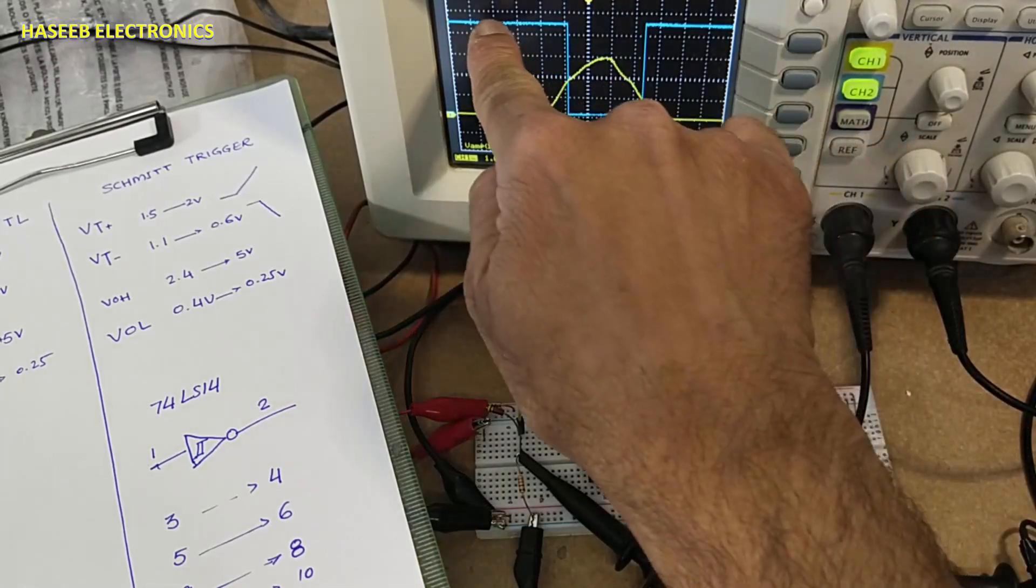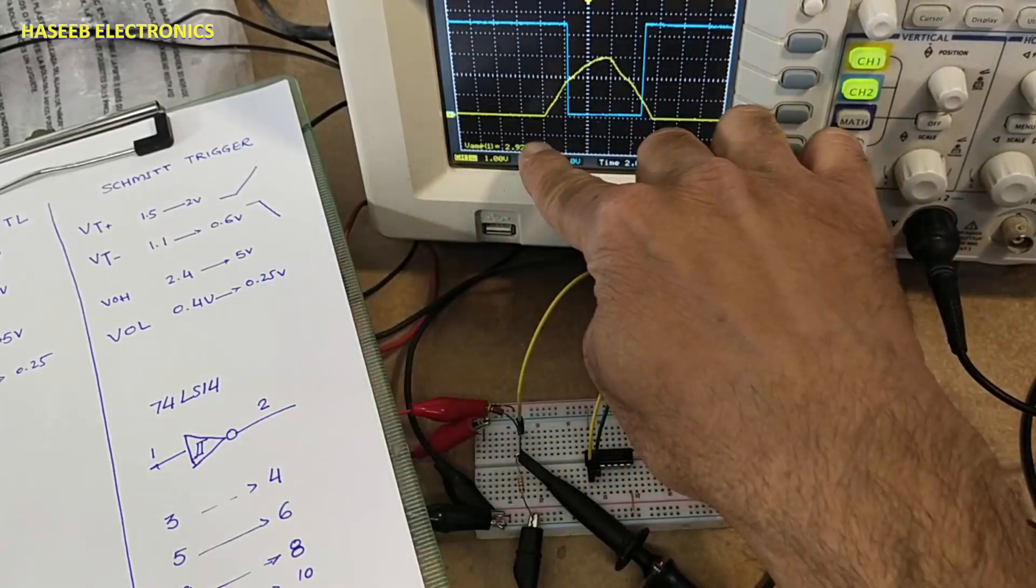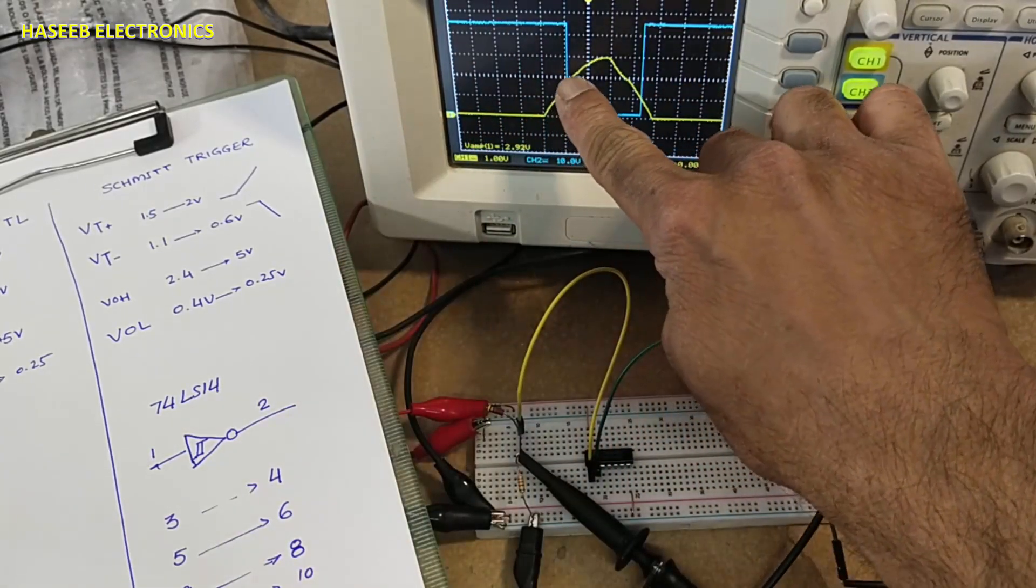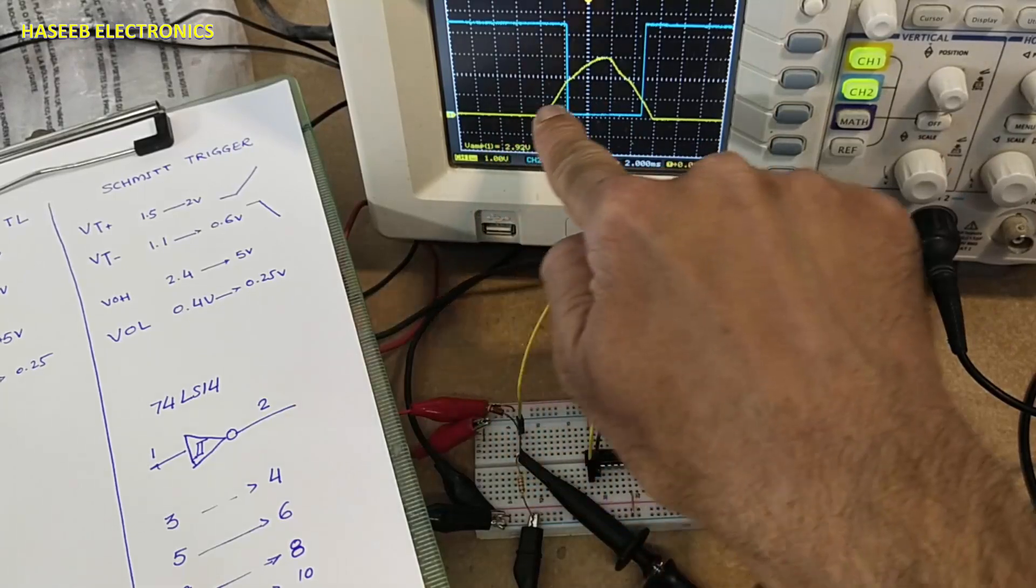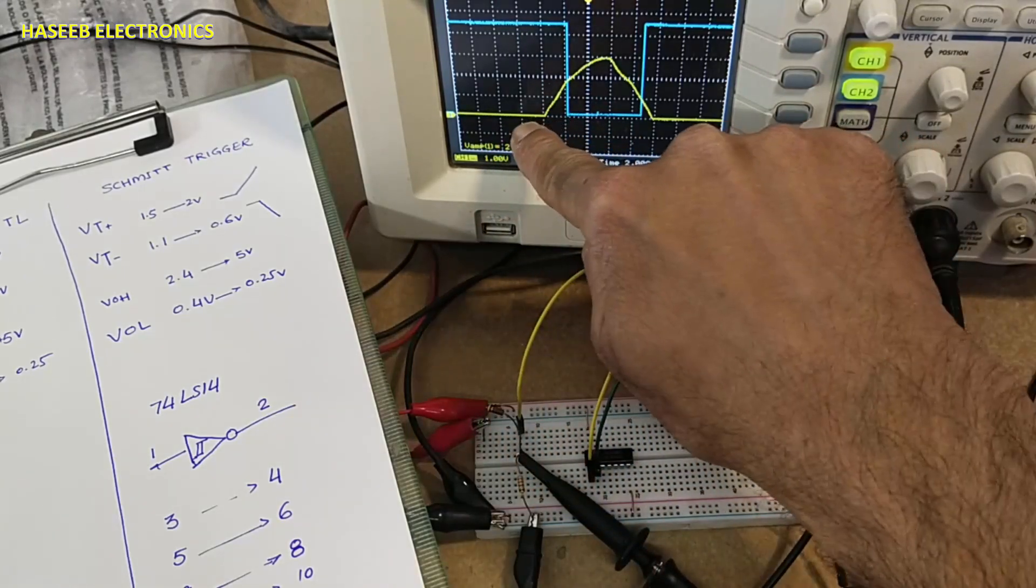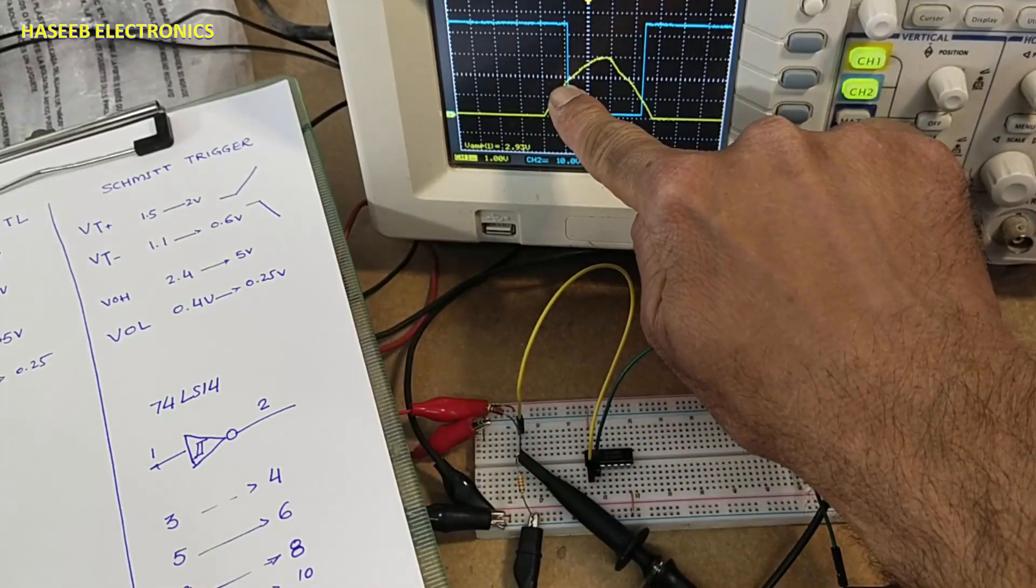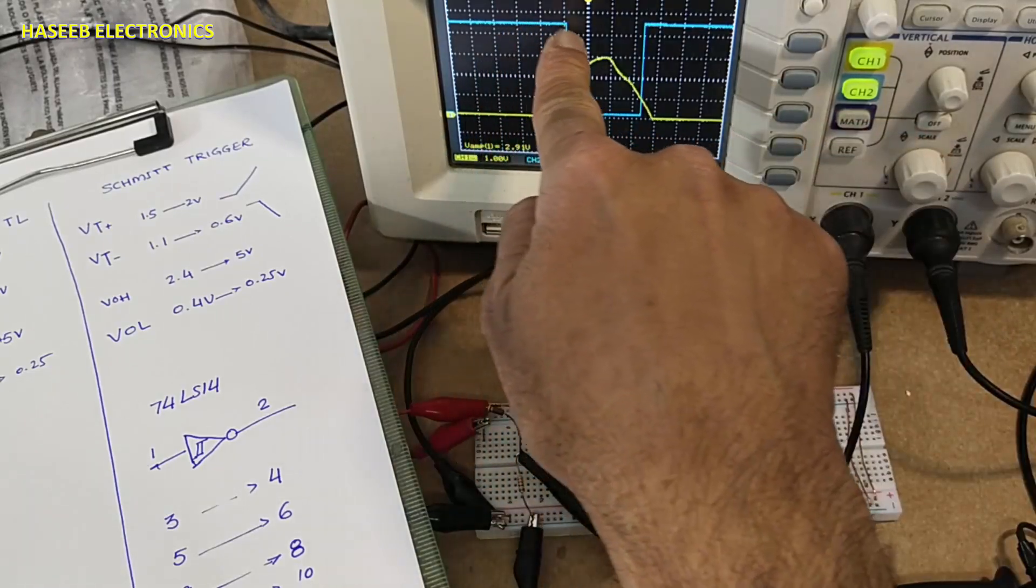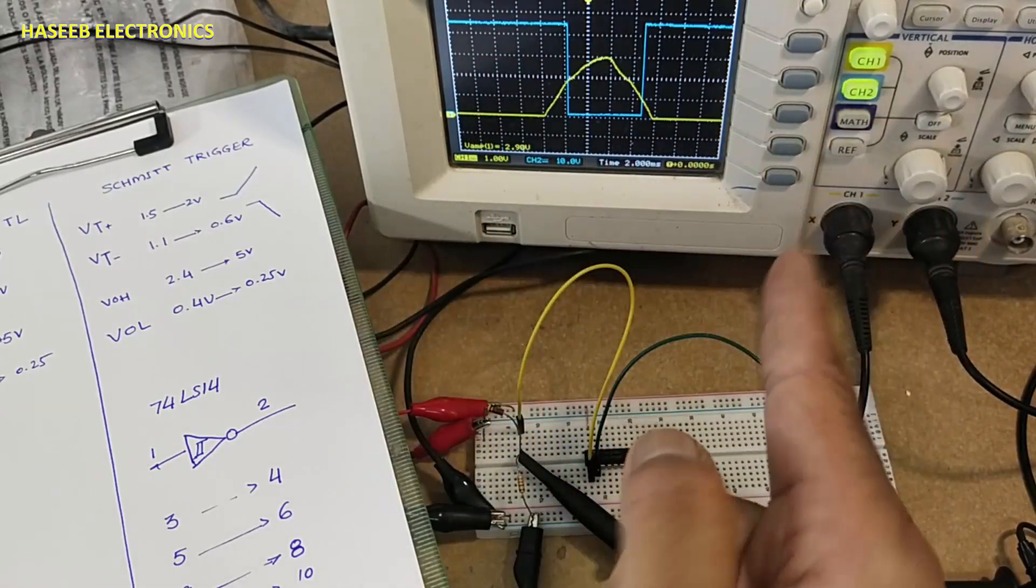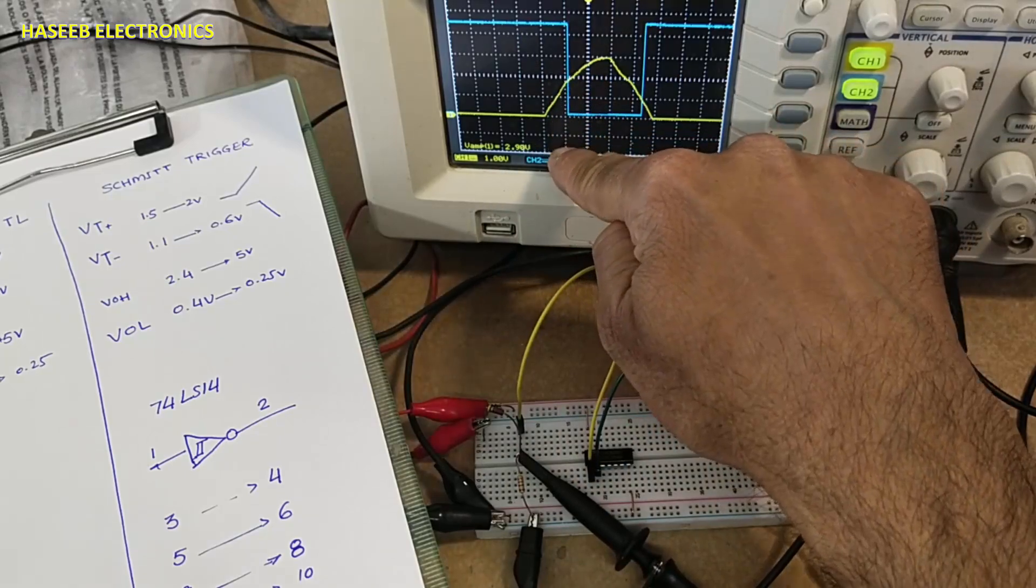Yellow signal is input signal, blue signal is output signal. When yellow signal is reaching around 1 volt, when it is reaching around 1.7 volts, it triggered the output. Because it is inverter, it is providing low output.